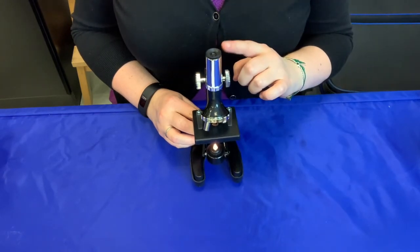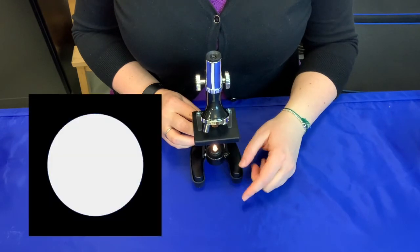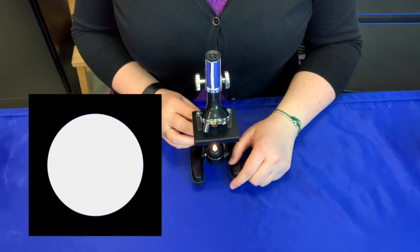Now when you look through the eyepiece, you're going to adjust the angle of the light bulb until you see a bright circle. When you see the bright circle of light in the eyepiece, you're ready to go.